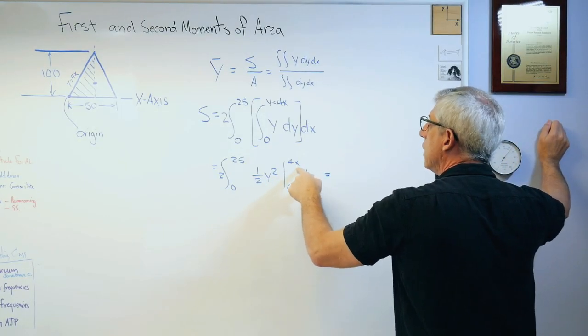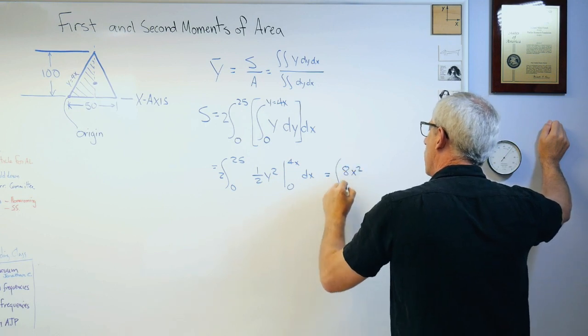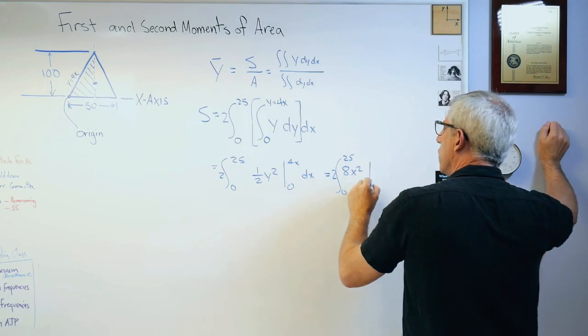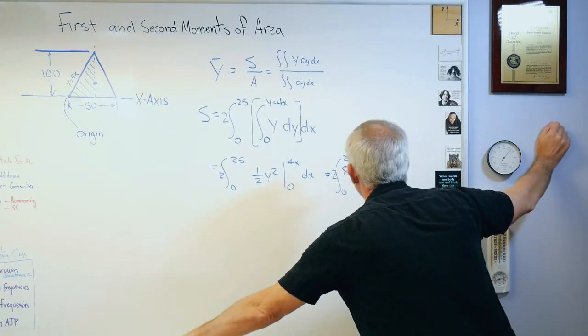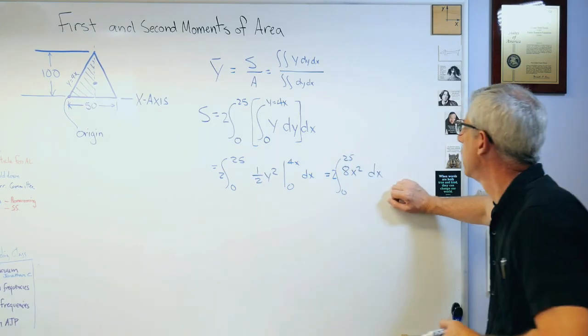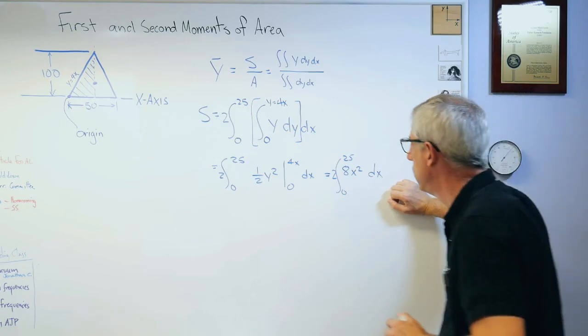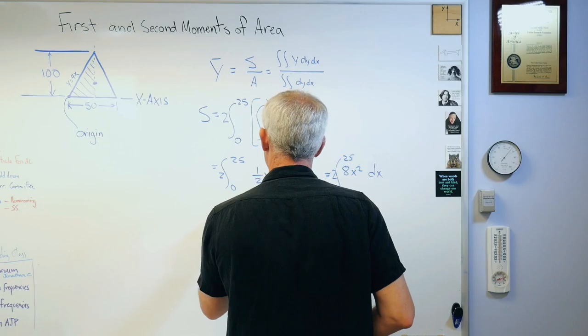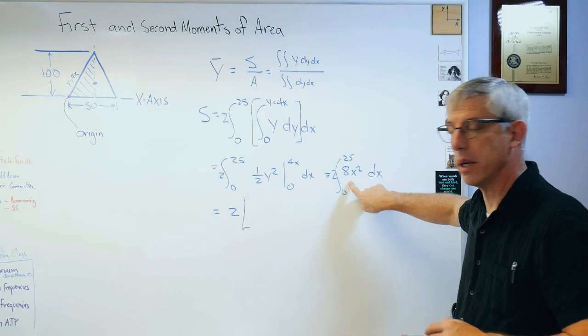Let's see. That's going to look like 4x squared is going to be 16x squared divided by 2, so that's going to be 8x squared. That goes from 0 to, I'm sorry, I've already evaluated that. So when I integrate again, I'll do this.